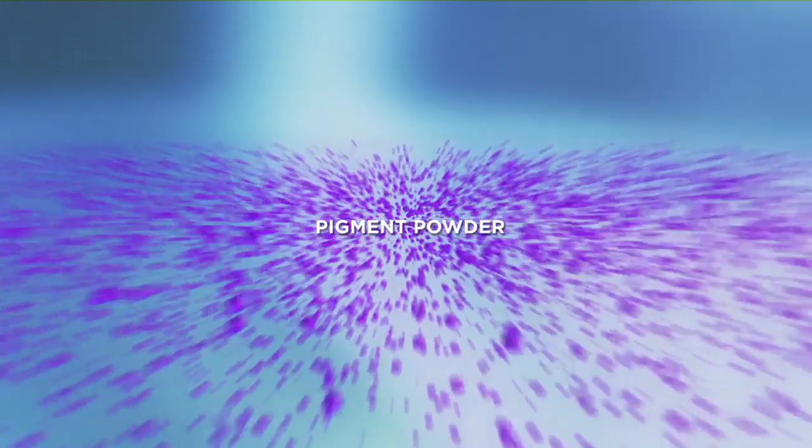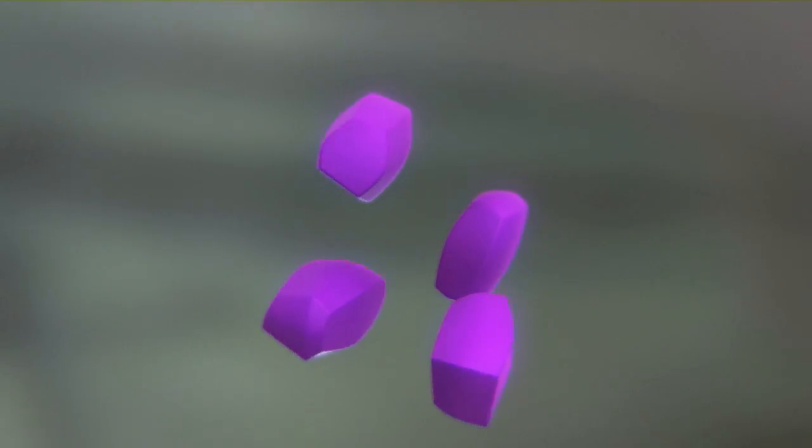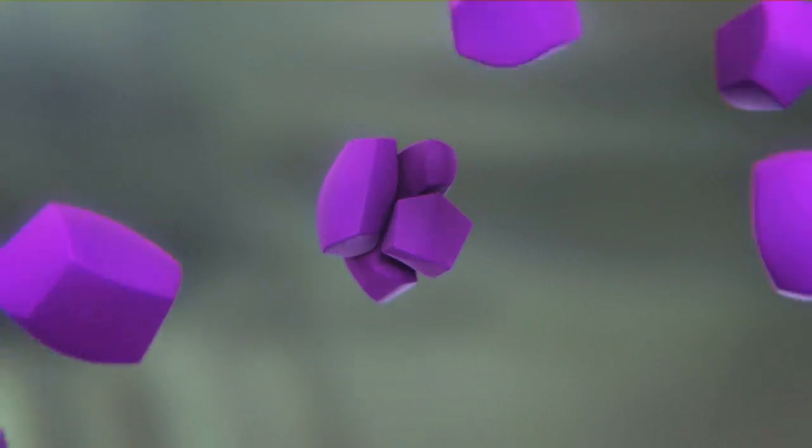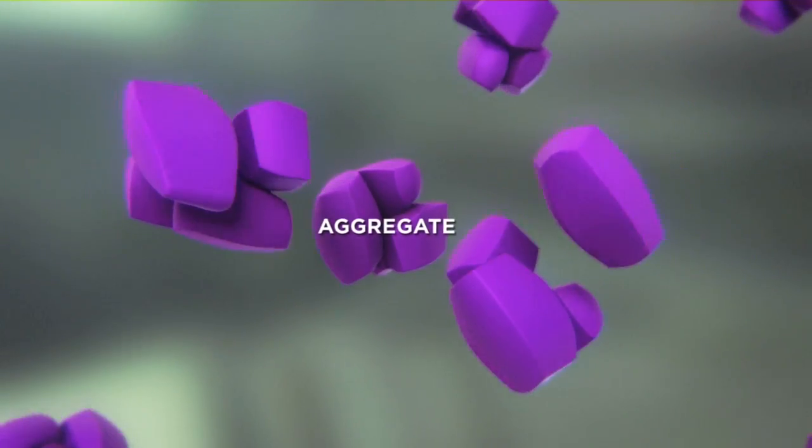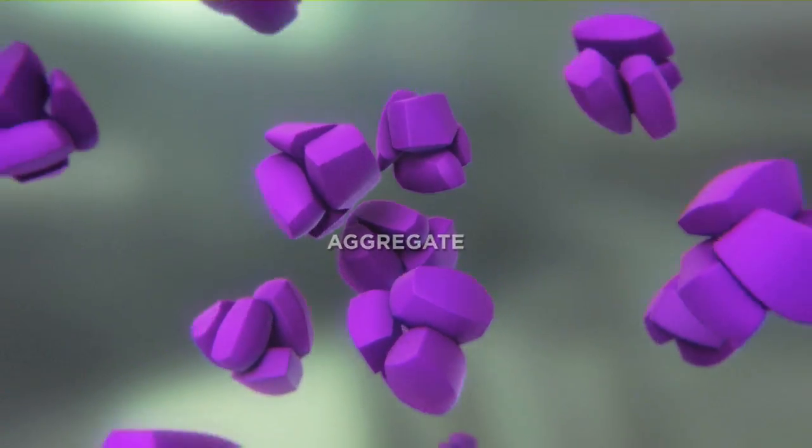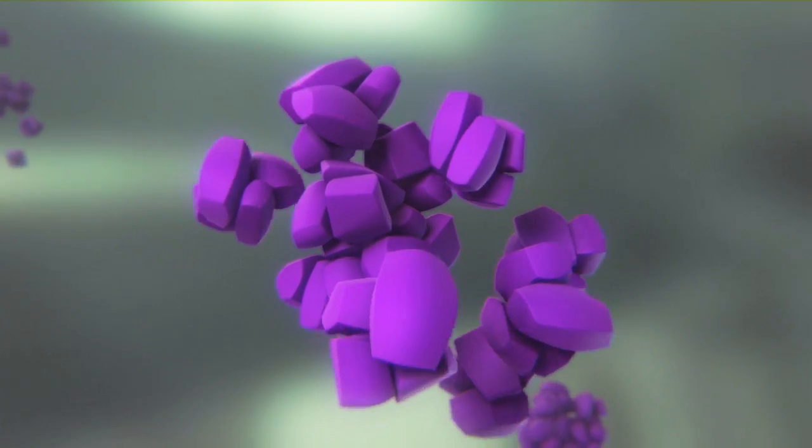During this step, the pigment particles stick together, a process known as clumping. Groups of several primary particles get together to create aggregates, which then form agglomerates.